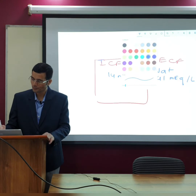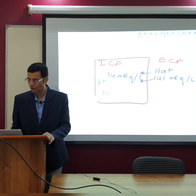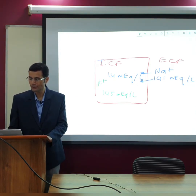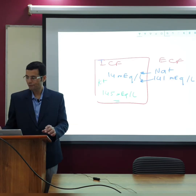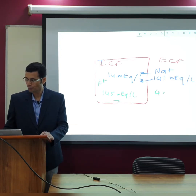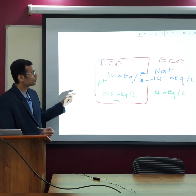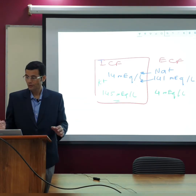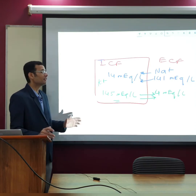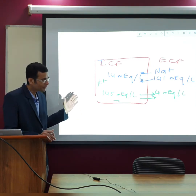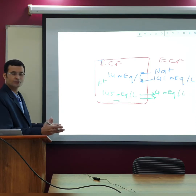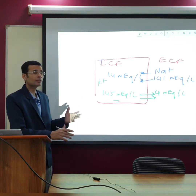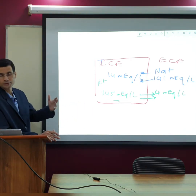Now let's consider potassium. Potassium has a concentration of 145 milliequivalents per litre in the ICF and about 4 milliequivalents per litre in the ECF. So the concentration gradient for potassium is from inside to outside, and potassium will diffuse from inside to outside due to its concentration gradient.